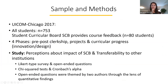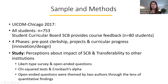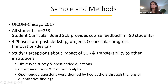Here are the sample and methods. They decided to implement the whole thing in 2012 but measured it in 2017. All students together are 753 students, quite a bit. The Student Curricular Board is only a smaller fraction — 80 students — selected by students in four different phases. It's a mixed methods study design. They asked about perceptions of the SCB's impact and transferability to other institutions. It's a Likert-type survey with open-ended questions. The authors applied chi-square tests and Cronbach's alpha to look into reliability and validity, and open-ended questions were analyzed by two authors through the lens of thematic coding.